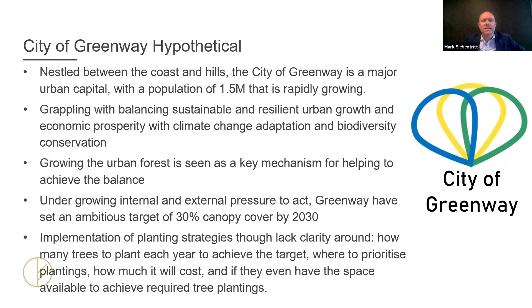We're going to step through a hypothetical example of the City of Greenway. This is a fictitious council area — a major urban capital with a population of one and a half million people that's rapidly growing. Like many cities around the world, they're trying to get the right balance between sustainable and resilient urban growth, adapting to climate change, and ensuring biodiversity conservation. They see the urban forest as really important for helping achieve that balance. They're under growing internal and external pressure to act, having set an ambitious target of 30% canopy cover by 2030.